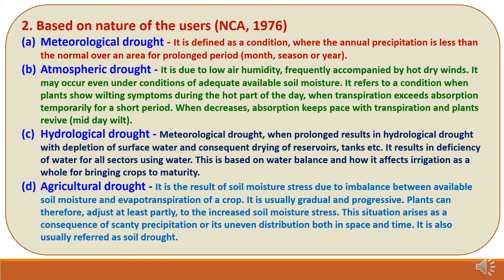Third is hydrological drought. Meteorological drought, when prolonged, results in hydrological drought with depletion of surface water and consequent drying of reservoirs, tanks, etc., resulting in deficiency of water for all sectors using water. This is based on water balance and how it affects irrigation as a whole for bringing crops to maturity. Fourth is agricultural drought. It is the result of soil moisture stress due to imbalance between available soil moisture and evapotranspiration of a crop. It is usually gradual and progressive, so plants can adjust at least partially to the increased soil moisture stress. It is also referred to as soil drought.